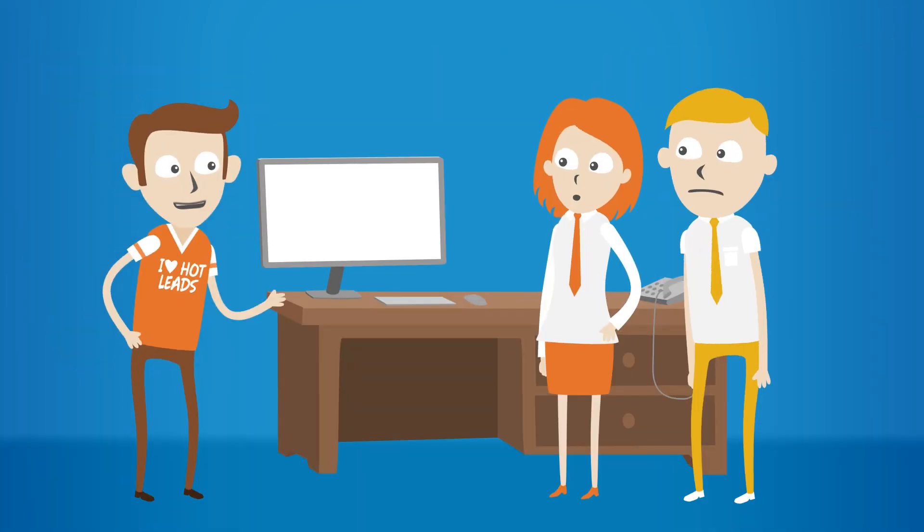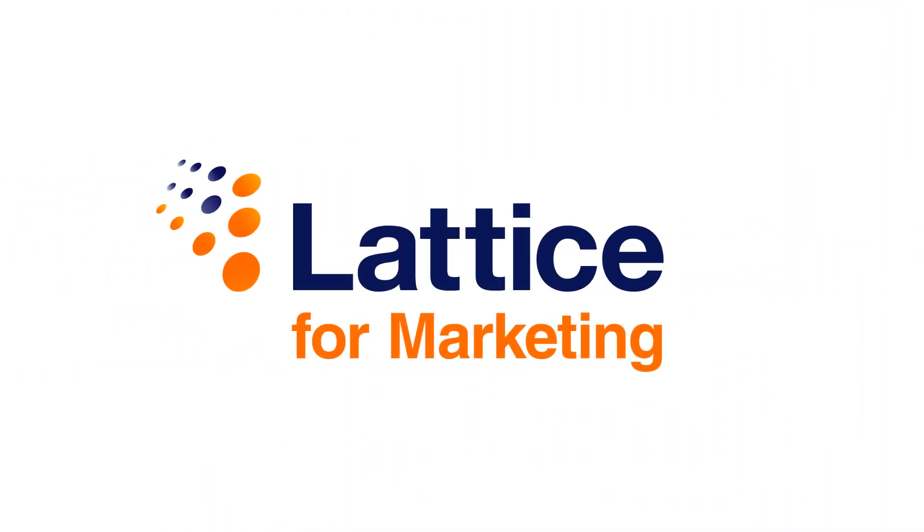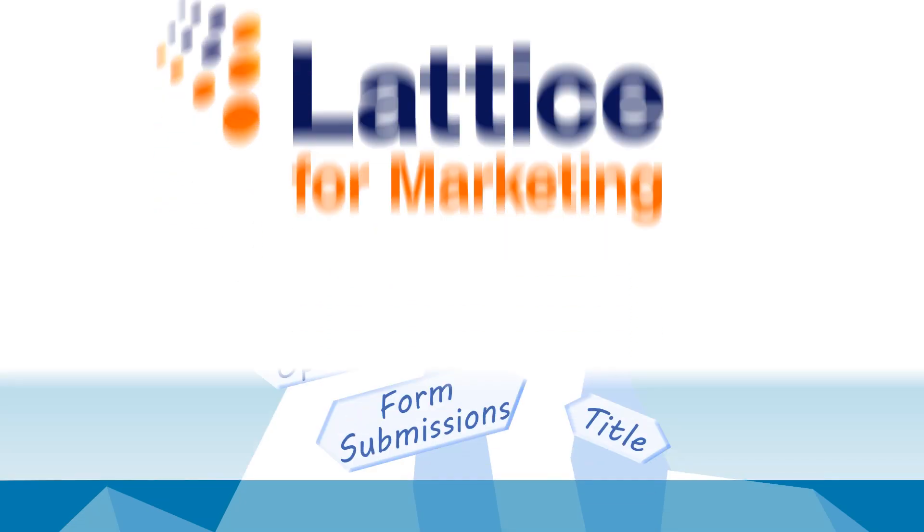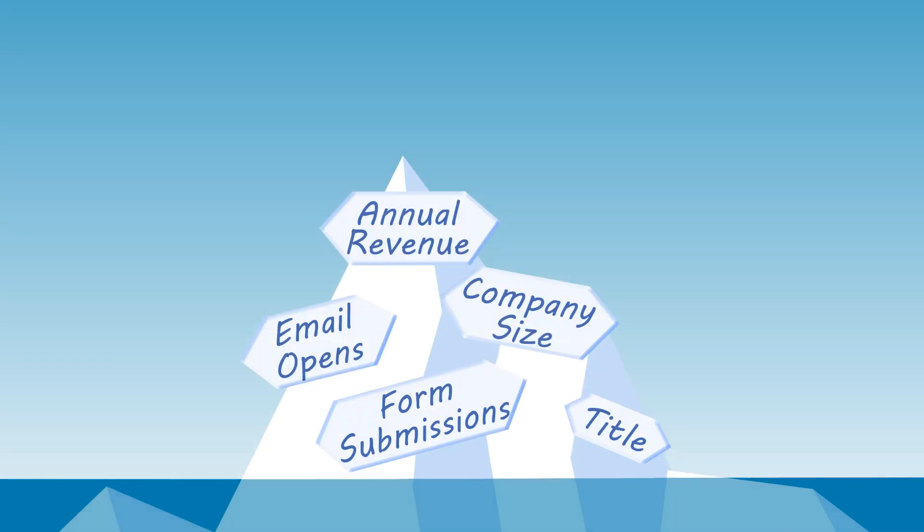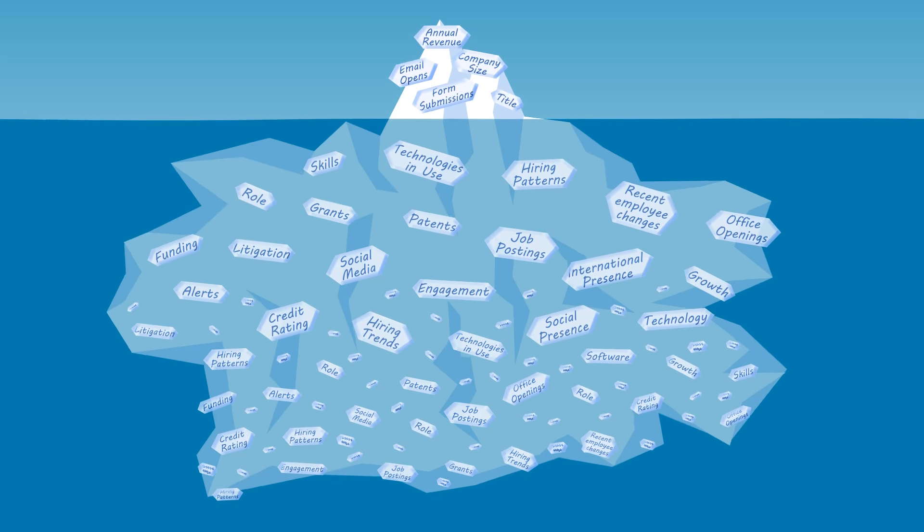Instead of leaning on such limited data and guesswork, check out Lattice for marketing. Lattice uses the power of data science to prioritize the leads for you. They take the data you were using to create a lead scoring model and combine it with thousands of additional lead attributes in their huge data cloud.